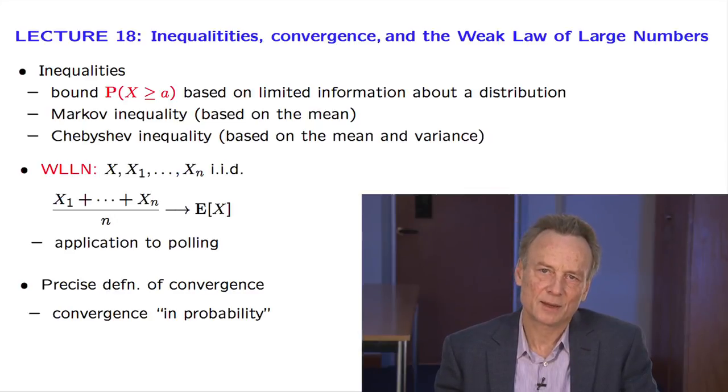Both of them tell us something about tail probabilities. Suppose that A is a number. Then it is reasonable to expect that the probability that the random variable exceeds A will be small when A is very large. But how small?